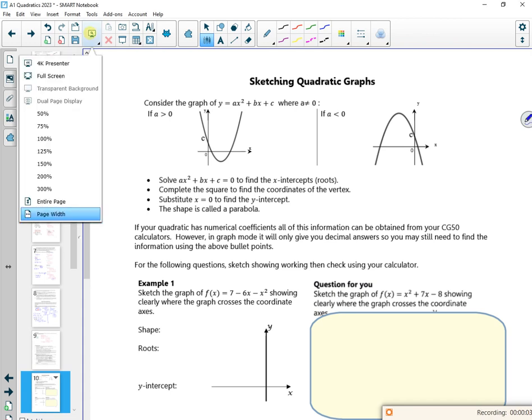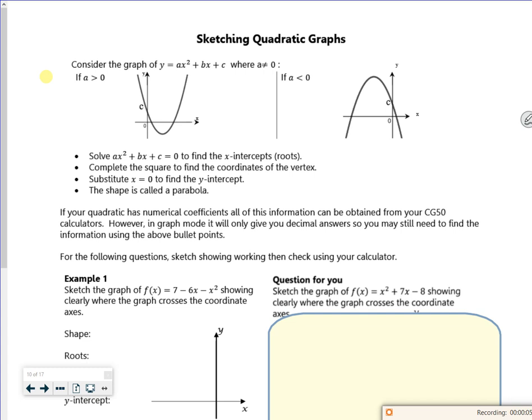Hi guys, so this is the third lesson for the 2023 quadratic pack. Consider the graph of y = ax² + bx + c. If it was like 2x squared, you'd expect it to be a u-shaped graph, whereas if it was minus 2x squared, you'd expect it to be an n-shaped graph. So this a determines which way up your graph's going.